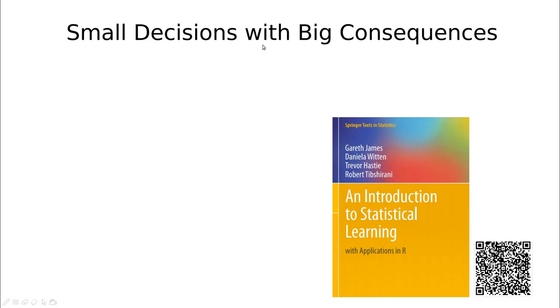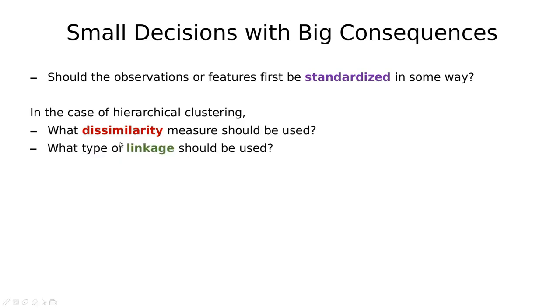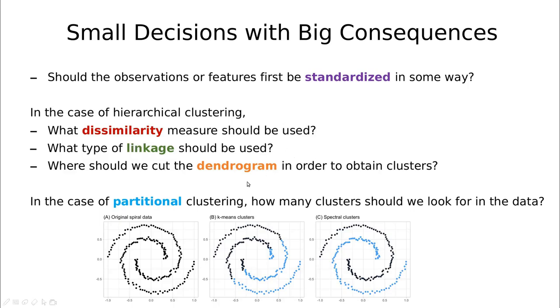The first consequence is related to the data. We should standardize the data somehow, because otherwise we're going to compare things that are not comparable. The other type of problem is in the case of hierarchical clustering: in which way we define the similarity, or how can we connect different observations, or how can we cut the dendrogram. And in the case of k-means or other partitional clustering methods, how many clusters should we look for in the data? These decisions are going to change a lot the outcome.